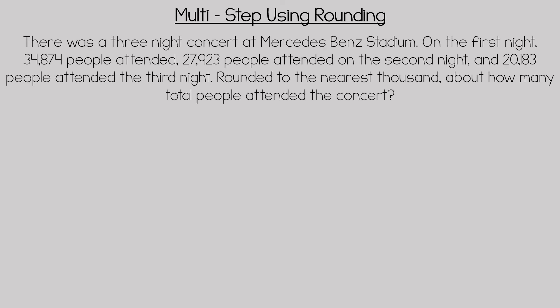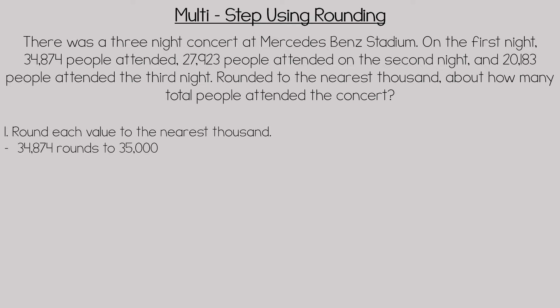This word problem is an example of a multi-step problem using rounding. There was a three-night concert at Mercedes-Benz Stadium. On the first night 34,874 people attended, 27,923 people attended on the second night, and 20,183 people attended the third night. Round to the nearest thousand — about how many total people attended the concert? Step one: round each value to the nearest thousand. So 34,874 rounds to 35,000, 27,923 rounds to 28,000, and 20,183 rounds to 20,000.